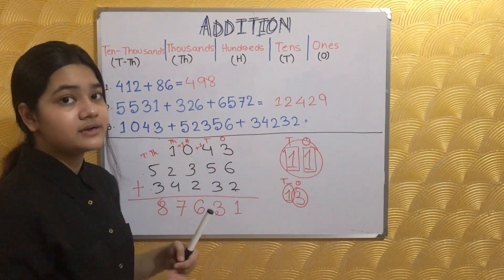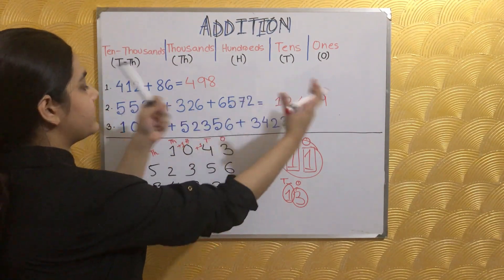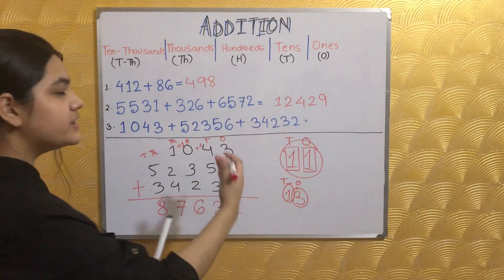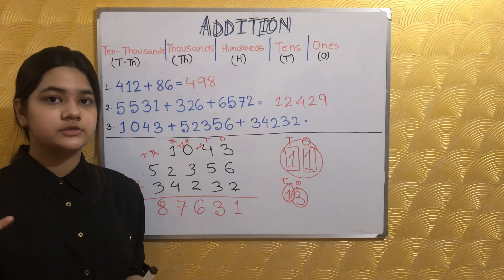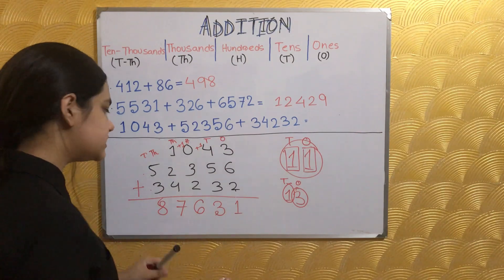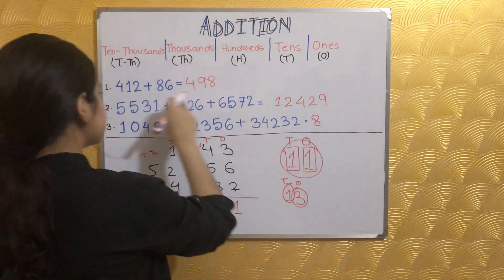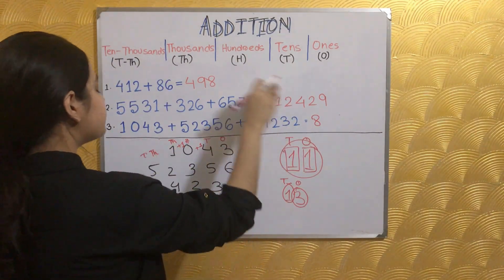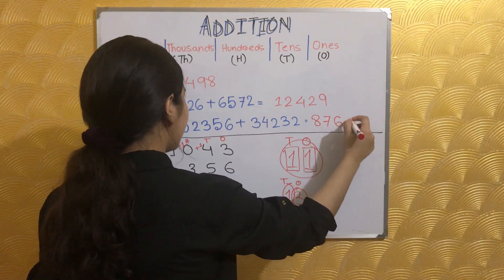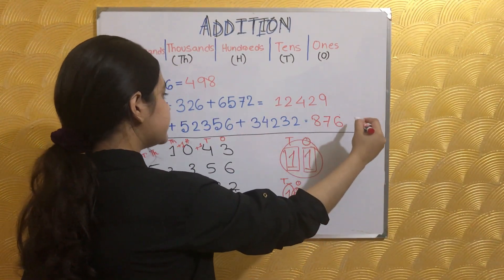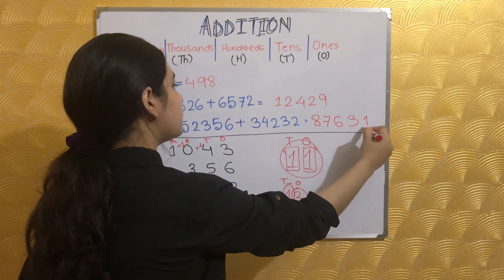That would have been a lot more difficult without stacking them up. We stacked them so it's easier to do the calculation. The whole number together makes eighty-seven thousand, six hundred and thirty-one — 87,631.